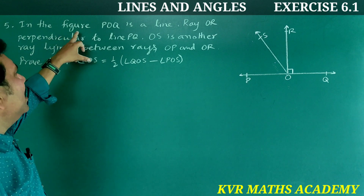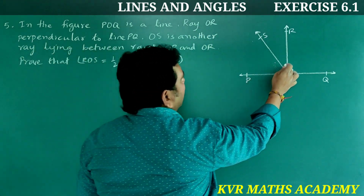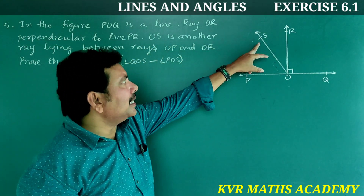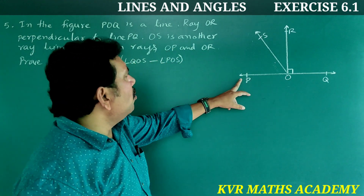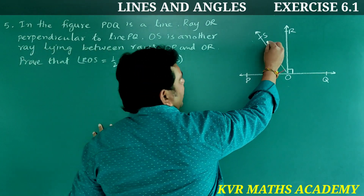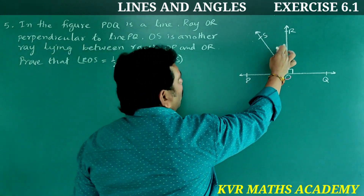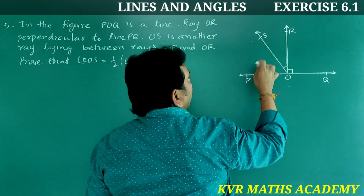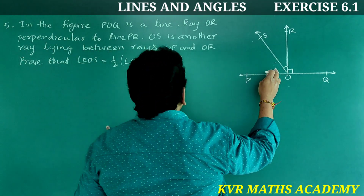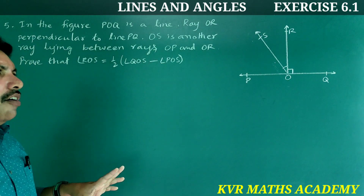Look here — what is given? In the figure, POQ is a line. Ray OR is perpendicular to line PQ. OS is another ray lying between rays OP and OR. Then what we have to prove: angle ROS is equal to half of angle QOS minus angle POS.